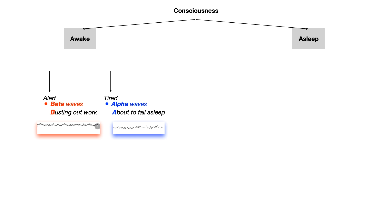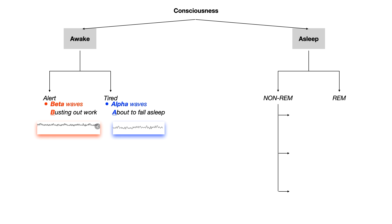That's the awake consciousness. Now let's talk about what happens when you're asleep - that's really the bulk of this lecture. Being asleep can be separated into two sub-stages: non-REM and REM sleep. REM stands for rapid eye movement because one of the hallmark features of REM sleep is that your eyes are oscillating back and forth. REM sleep is its own stage, but non-REM sleep is further subdivided into three more stages: N1, N2, and N3.